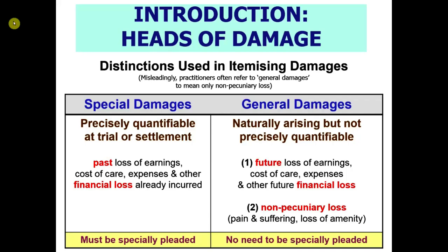You can precisely calculate, for example, the past financial loss — the loss of earnings, the cost of care, the expenses. You can pre-calculate precisely: how much were you earning a week? You've been off work for 10 weeks, therefore you've lost that many pounds. You've lost the damaged clothing, the damage to the car, you've paid for physiotherapy and private medical treatment — there's a bill there. It's financial loss already incurred, more certain, and you can calculate it down to the last penny.